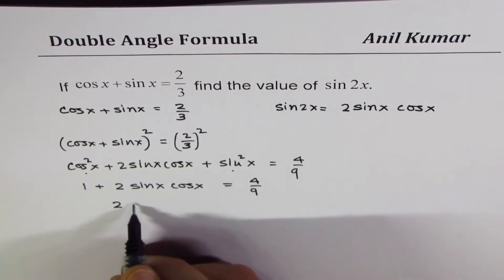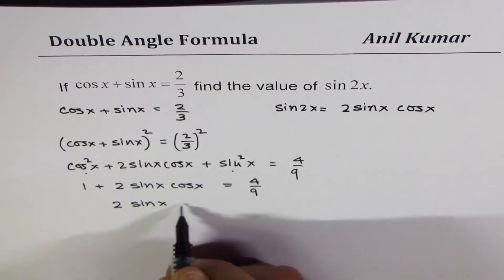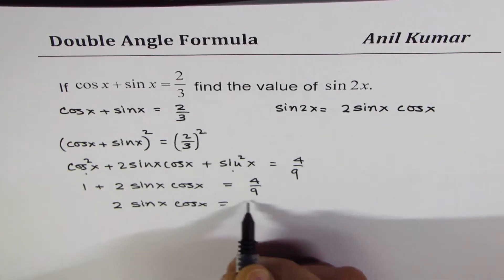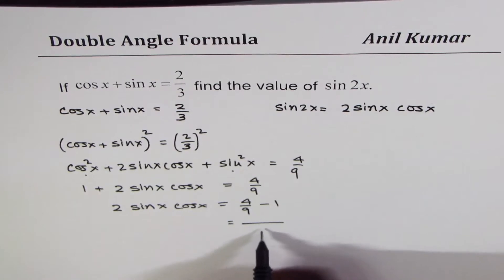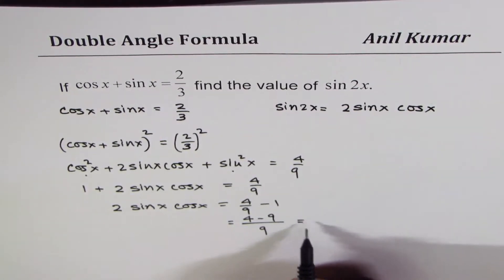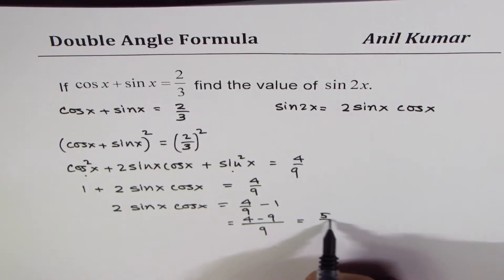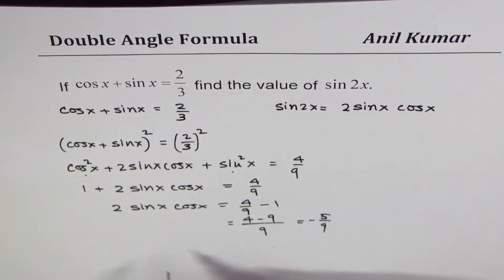Or, 2 sin x cos x equals 4 over 9 minus 1. Taking 9 as common denominator becomes 4 minus 9, which is negative 5 over 9.